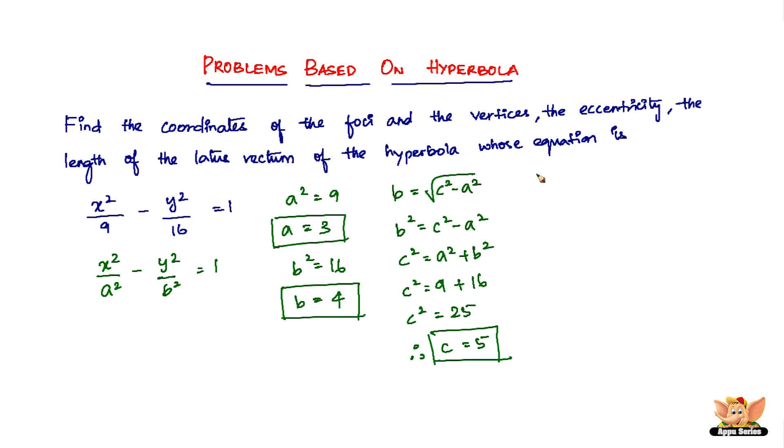So the coordinates of the foci will be given by 5, 0 and minus 5, 0. So we've got one answer now, the coordinates of the foci. Now we have to find the coordinates of the vertices. Let me tell you how I found the foci because the coordinates of the foci is given by c, 0 and minus c, 0.